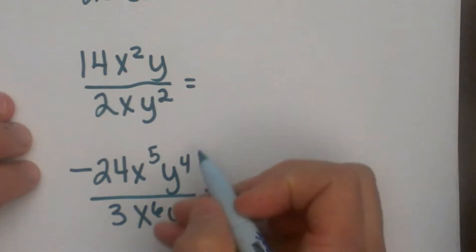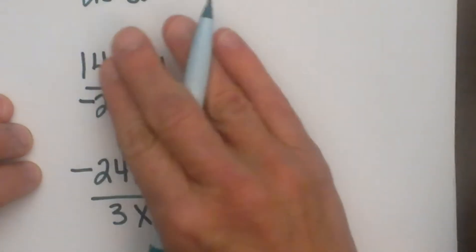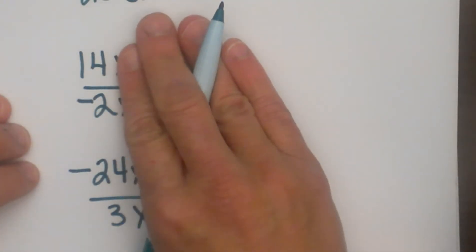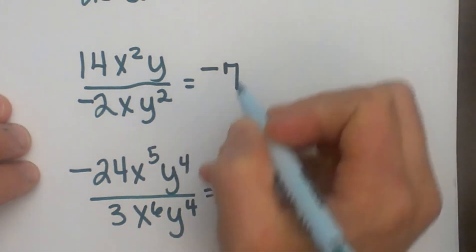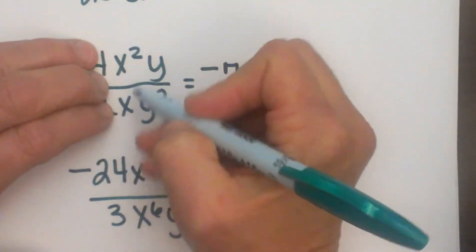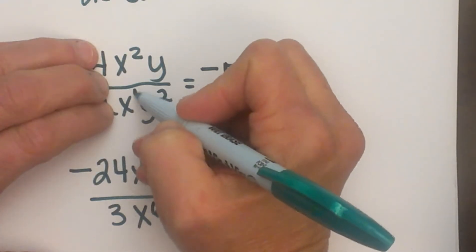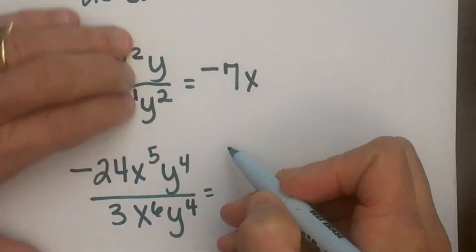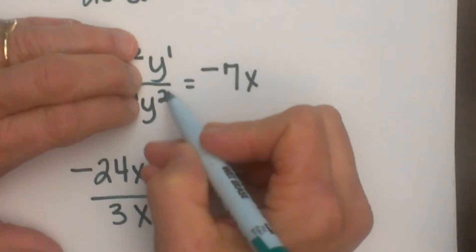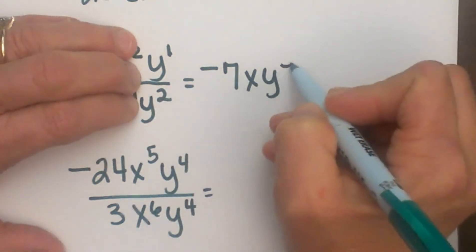Let's look at another one. We are going to take coefficients, we have learned just to divide those, so 14 divided by negative 2 is negative 7, and then let's deal with the variables one at a time. x squared divided by x to the first, and that is a first, so I subtract and I get x to the first. And then I am going to get y to the first divided by y squared. That is going to give me y to the, well, 1 minus 2 is negative 1.